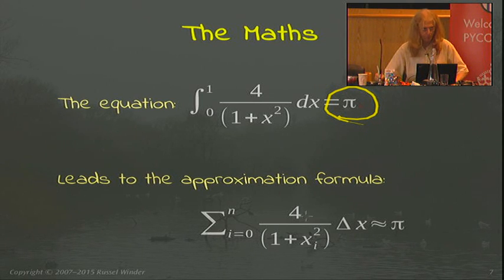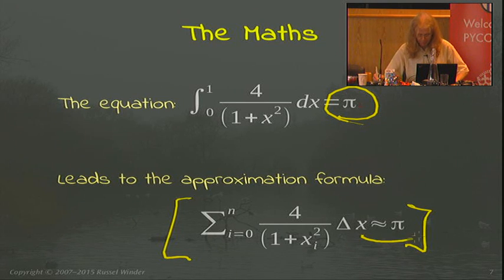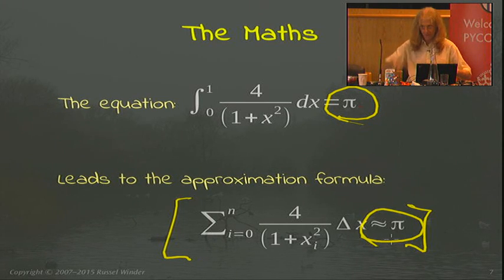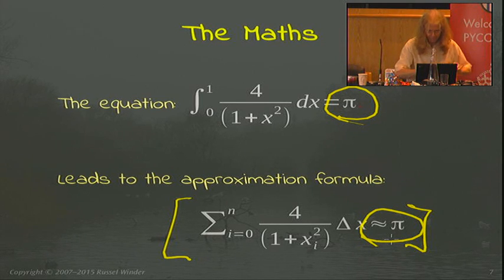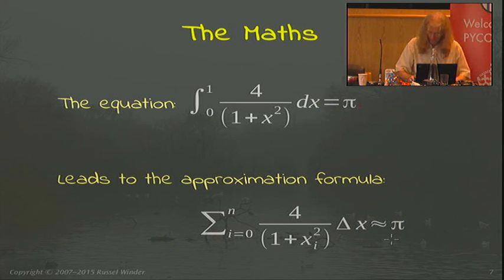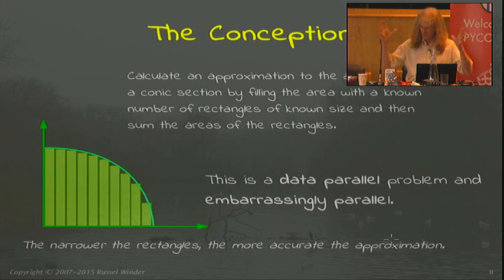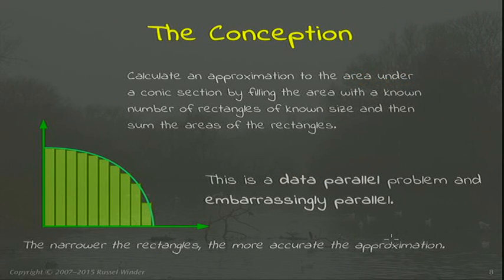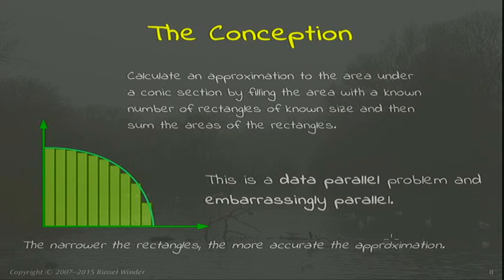The universe is not big enough to be able to do this computation numerically, so we're going to have to make some sort of approximation. This gives us an approximate value of pi numerically, hence the 3.1415926... The concept is basically finding areas under conic sections. It's a data parallel, embarrassingly parallel problem, so we should get scaling with the number of processes.